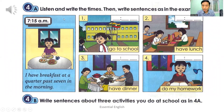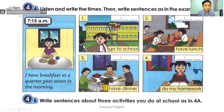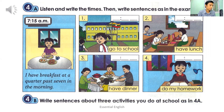Now listen and write the times, then write sentences as in the example. Exercise 5: Listen and write the times, then write sentences as in the example: 'I have breakfast at a quarter past seven in the morning.' Number one: I go to school at half past eight in the morning. Number two: I have lunch at noon. Number three: I have dinner at a quarter to seven in the evening.